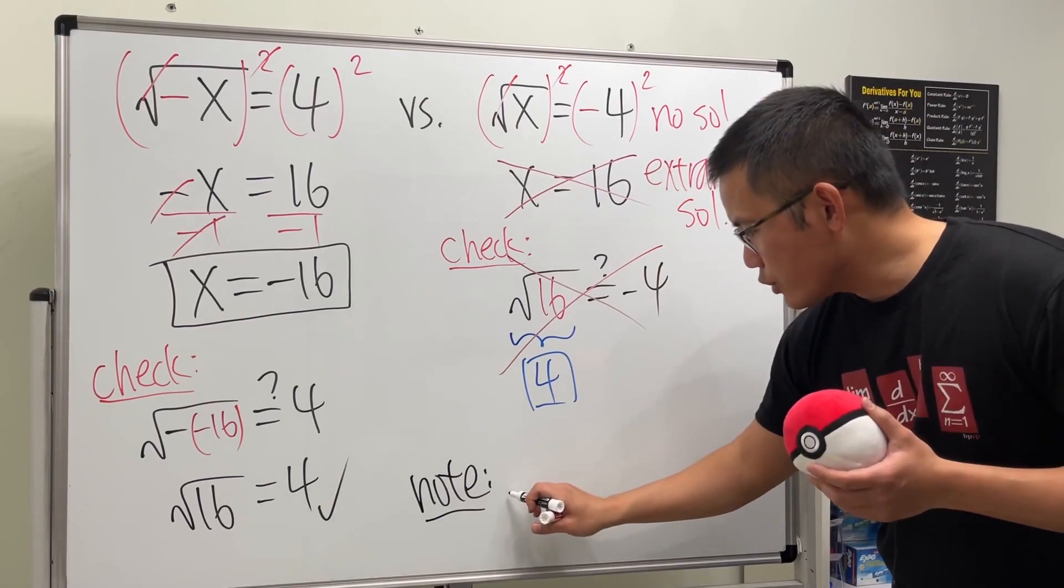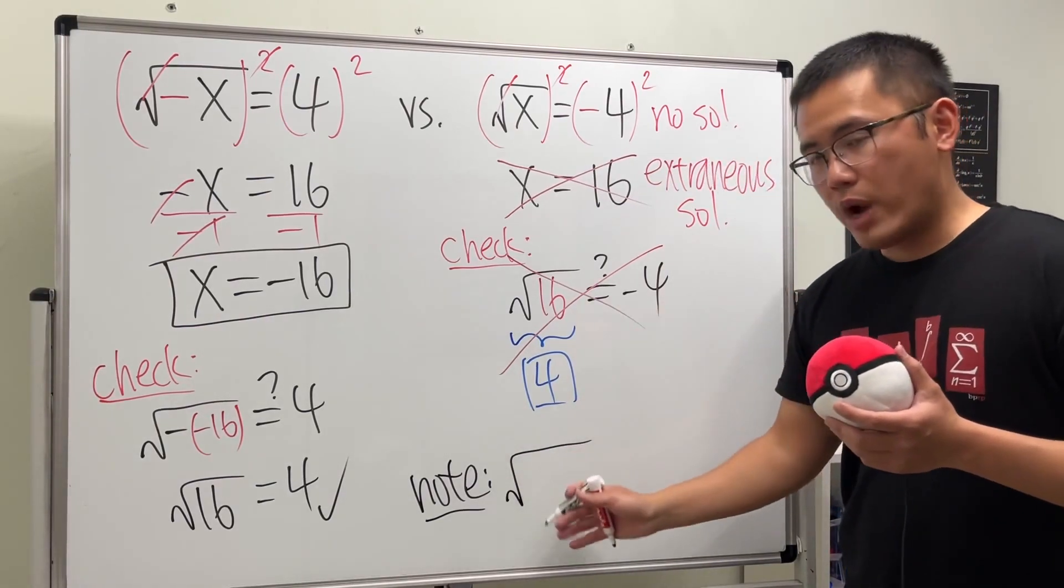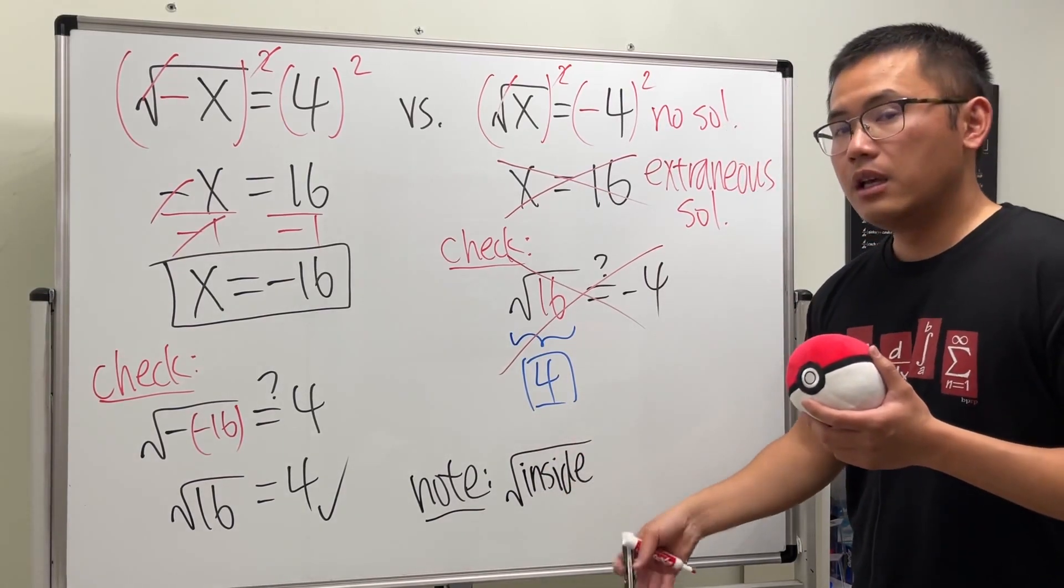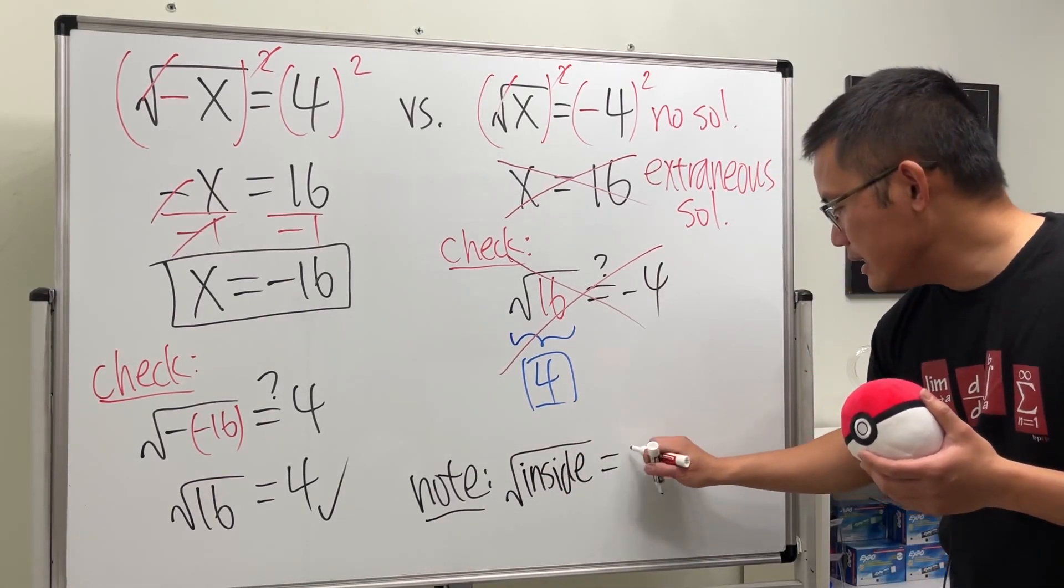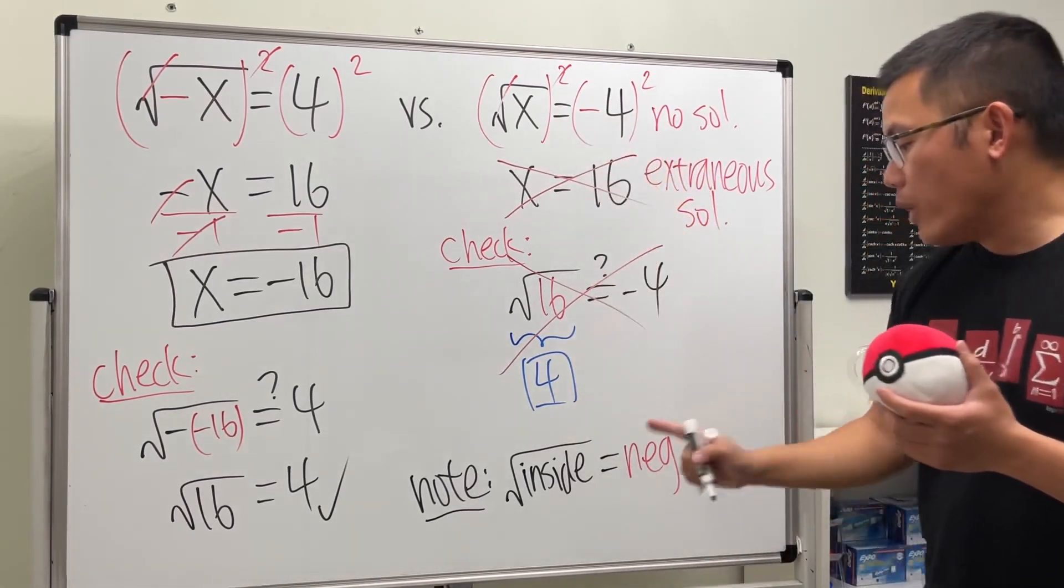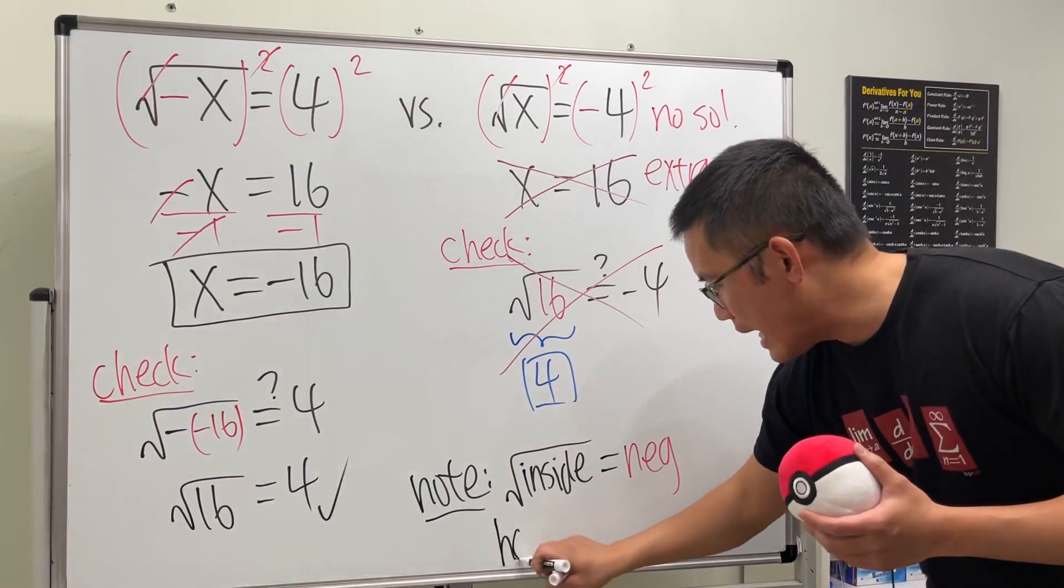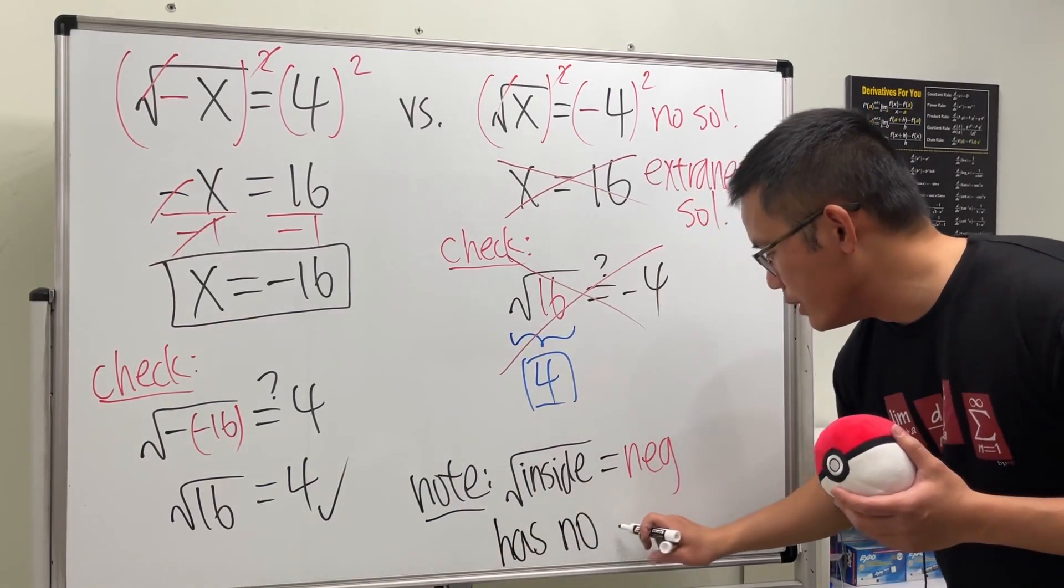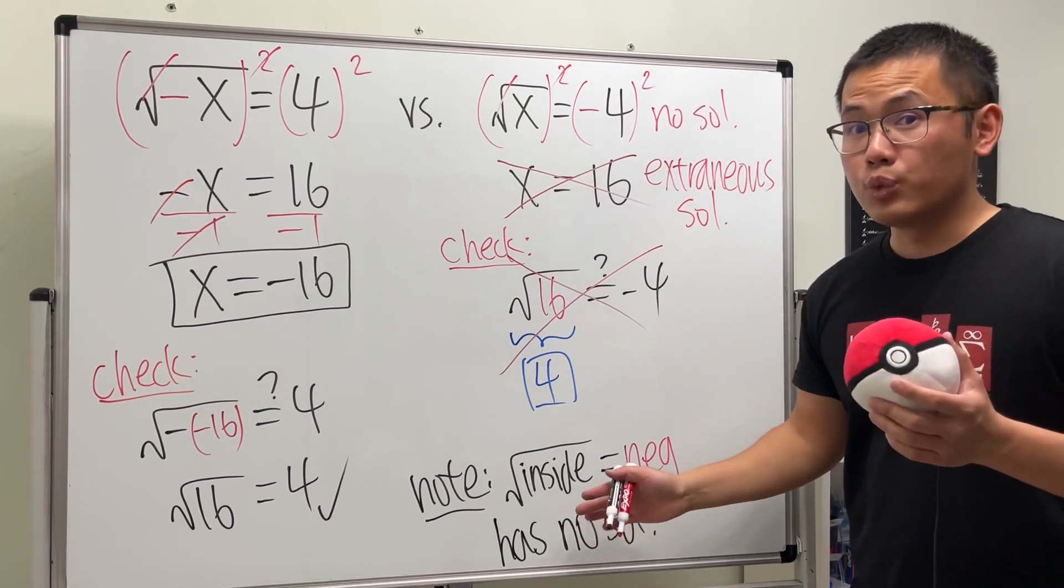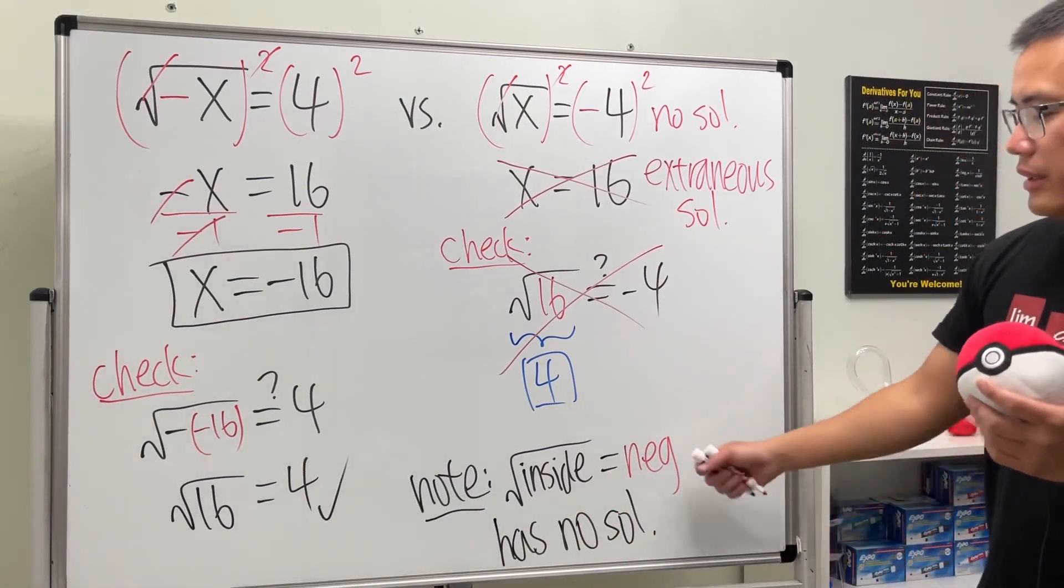Whenever you are trying to solve the equation square root with whatever you have inside, like let's say x, whatever inside, if the outside is equal to a negative number just like what we have over here, well this equation has no solutions at all. Not even the complex solutions, not even the solutions with i, no nothing.